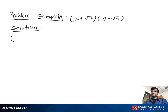Simplify 2 plus square root 3 times 3 minus square root 3. These are binomials, so first multiply and later simplify. So 2 times 3 we get 6, minus 2 times square root 3.